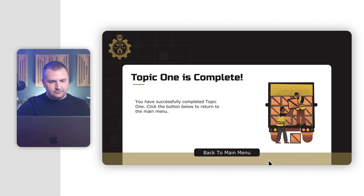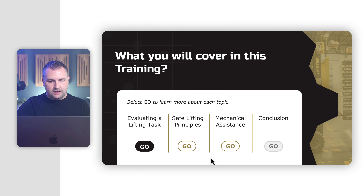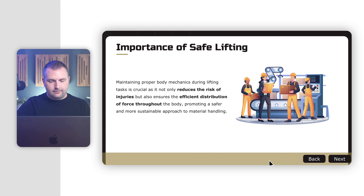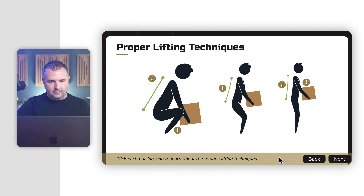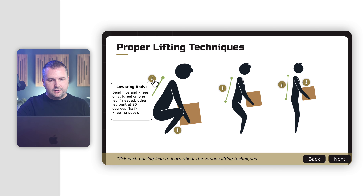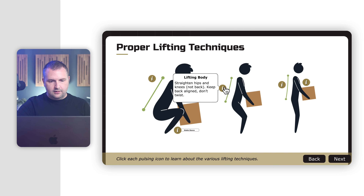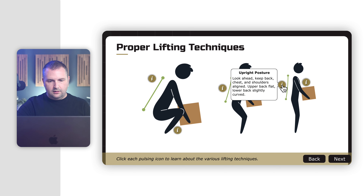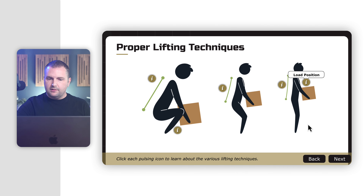Topic one complete. We'll go back to the main menu. Our second topic is safe lifting principles. Safe lifting techniques not only reduce the risk of injuries, but also ensure the efficient distribution of force throughout the body. There's a click-to-reveal interaction with great use of simple graphics and markers in Storyline: lower the body, stable stance, lifting body, upright posture, load position. Always avoid the following mistakes while lifting: keep your torso aligned with your feet, do not lift heavy objects above your shoulders, do not carry loads that block your sight.